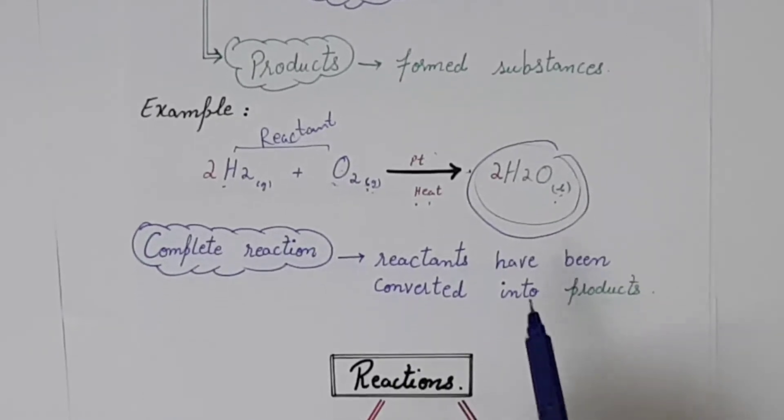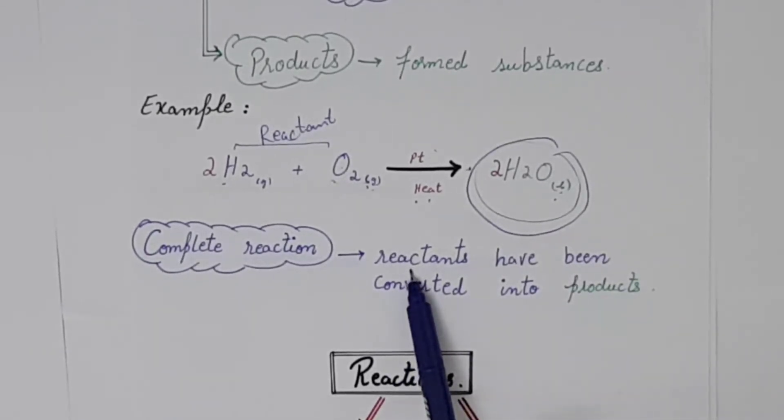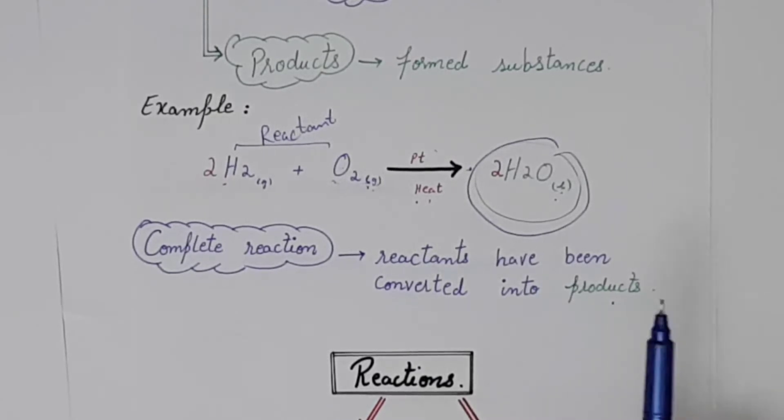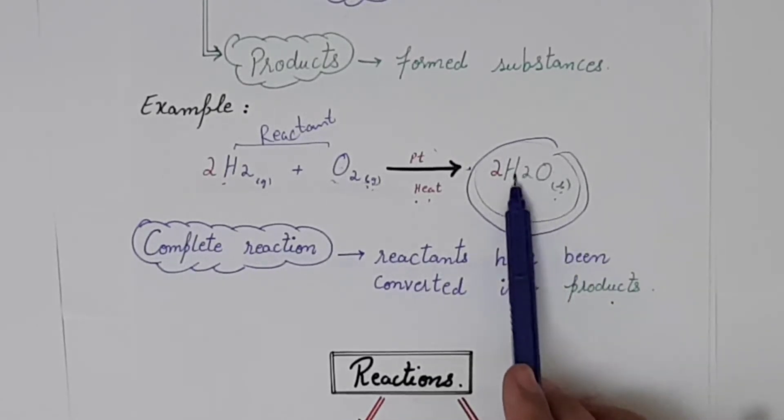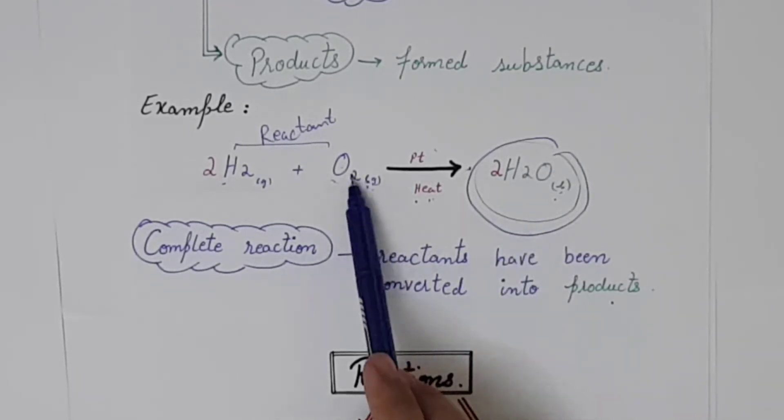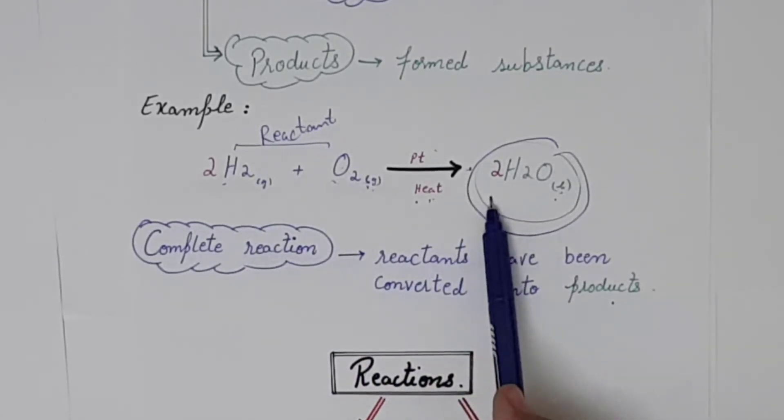Now, you have a complete reaction. What is a complete reaction? In which the reactant is completely converted into the product. Now, what happens? It doesn't happen that when it's in the same condition, the molecule breaks down into the gas state. This is impossible. Because this is a complete reaction.